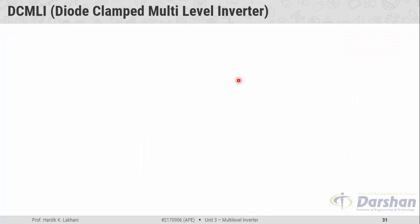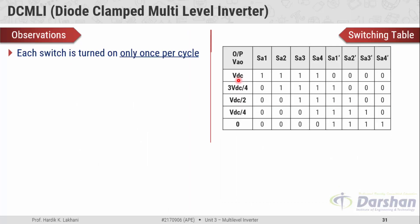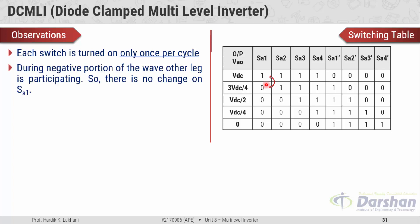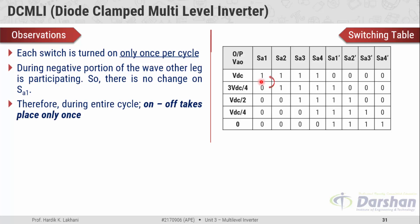An important observation of the diode clamp multilevel inverter is that each switch is turned on only once per cycle. From the switching table, you can see that switch SA1 is turned on while producing the fifth level VDC, and for all other levels, SA1 remains in the off state. During the positive portion of the wave, the other leg is participating, so there is no change in SA1. During the entire cycle, the on-off transition for SA1 takes place only once.